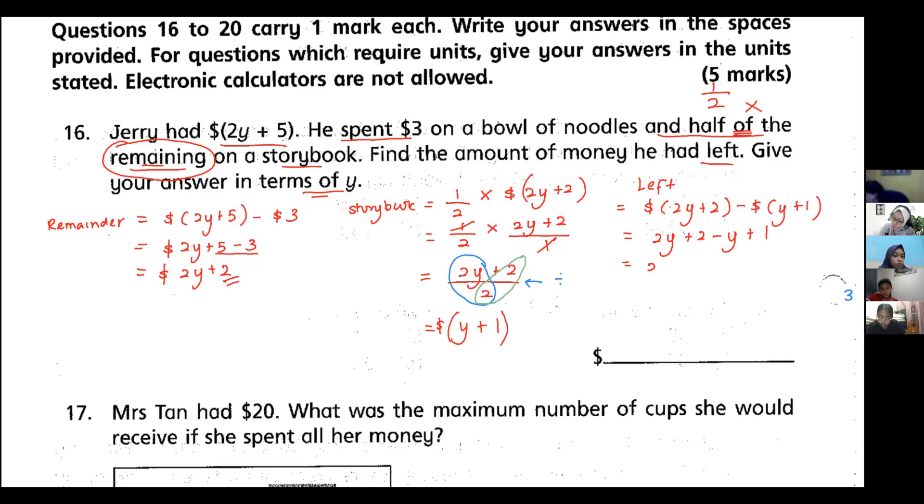This equals: 2y - y is y, plus 2 - 1 is 1. Put it back into bracket: $(y + 1). So y + 1 is the answer.